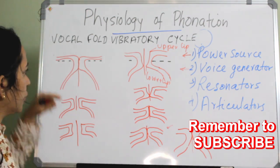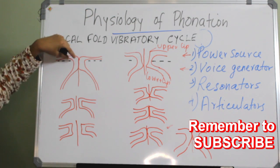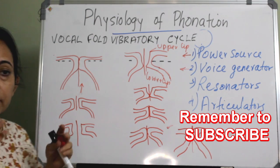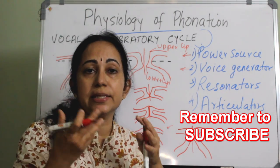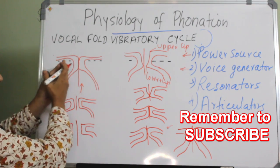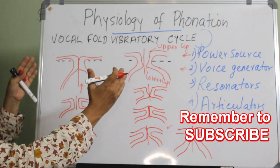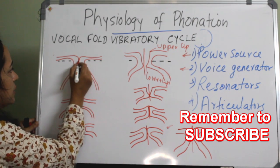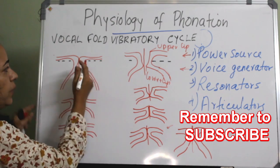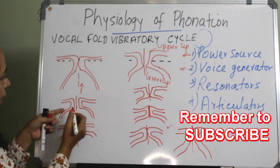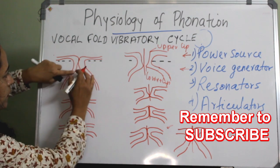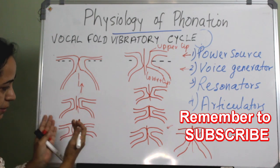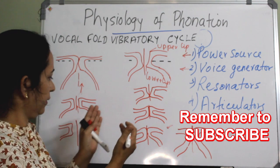Immediately after the pre-phonatory inspiratory cycle, the vocal folds adduct. After that an expiratory air column is coming, and when it gains sufficient force it will move the vocal folds apart — starting from below upward. First the lower lip will move apart, and after that the upper lip will also move apart, resulting in complete opening.